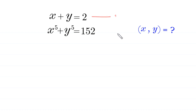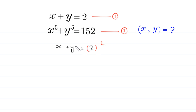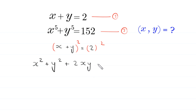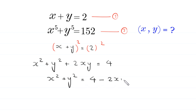Let us call this equation 1 and the second equation, equation 2. We square both sides of equation 1. So x plus y whole squared becomes x squared plus y squared plus 2xy is equal to 4. Moving 2xy to the right-hand side, we get x squared plus y squared is equal to 4 minus 2xy. Let us call this equation 3.